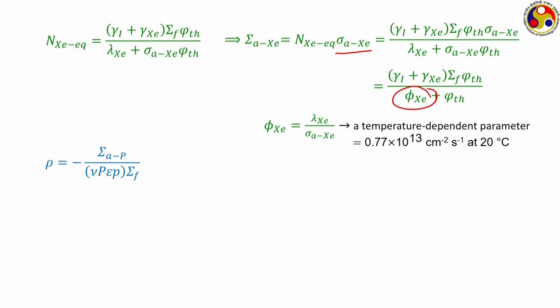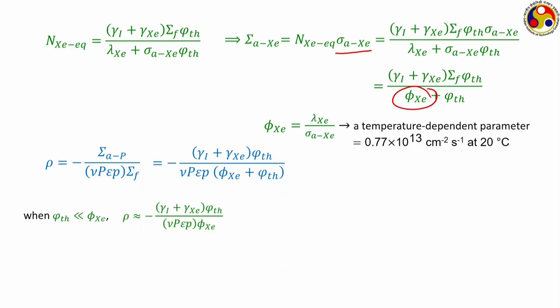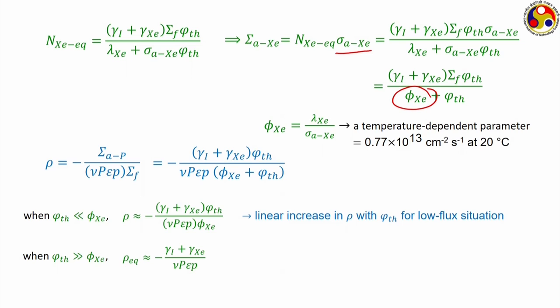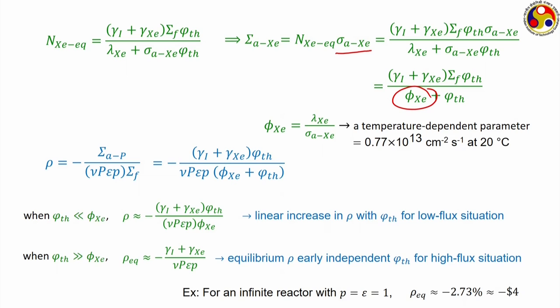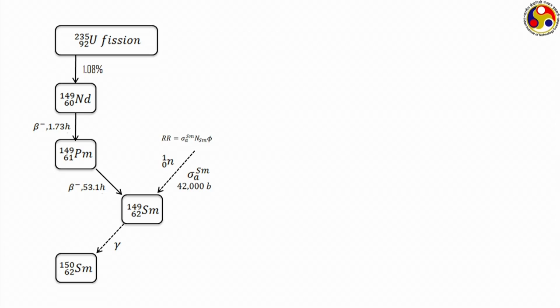Proceeding further, the macroscopic absorption cross section of xenon is obtained by multiplying equilibrium xenon concentration by the microscopic absorption cross section. The parameter φ_Xe = λ_Xe / σ_a,Xe is temperature-dependent, with value around 10¹² at 20°C. When thermal flux φ_th is much smaller than φ_Xe, reactivity is a linear function of φ_th. When φ_th is much larger than φ_Xe, the equilibrium reactivity remains nearly constant, independent of thermal flux. For an infinite reactor with η, ε, and p equal to 1, the equilibrium value of reactivity due to xenon poisoning is approximately minus 2.73%, which is roughly minus 4 dollars for uranium-235.